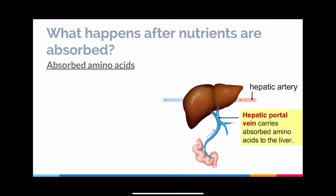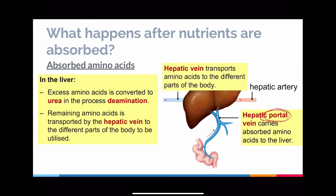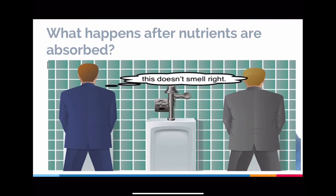Now for amino acids that are absorbed — likewise, the hepatic portal vein is the one that brings them to the liver. Excess amino acids in the liver are actually converted into what we call urea. So if there's too much protein in your diet — for example, you eat too much meat — the resulting amino acids will be converted into urea and used subsequently for other processes. The remaining amino acids are transported to the rest of the body to build muscles and repair different structures.